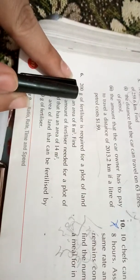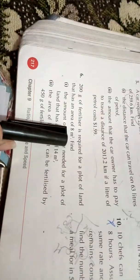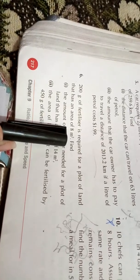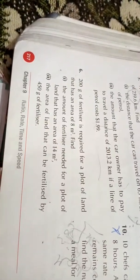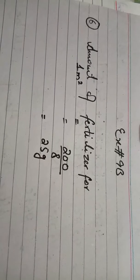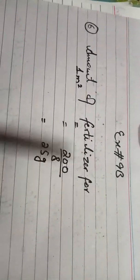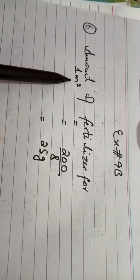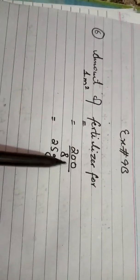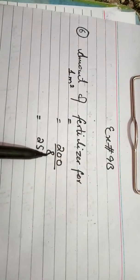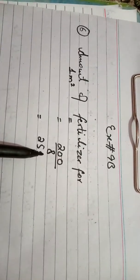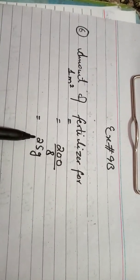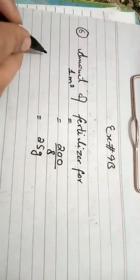First, we need to know how much fertilizer is required for 1 meter square. The total amount of fertilizer we have is 200 grams and the area is 8 meter square. We divide: 200 grams divided by 8 meter square, to find how much fertilizer is needed per 1 meter square.